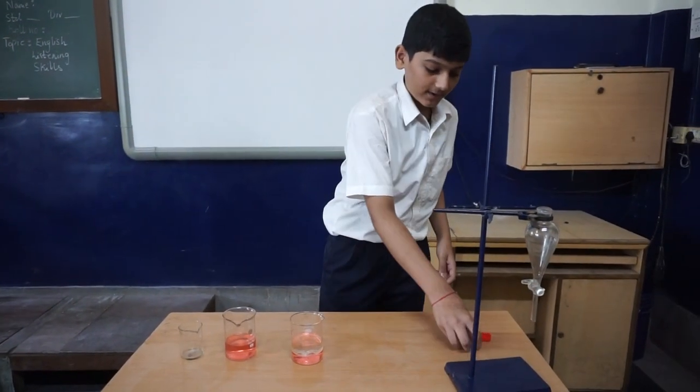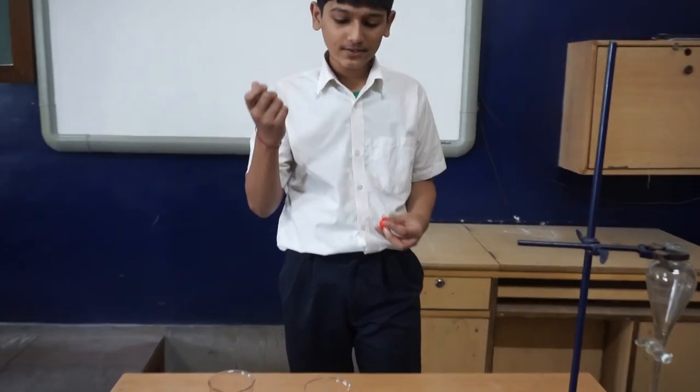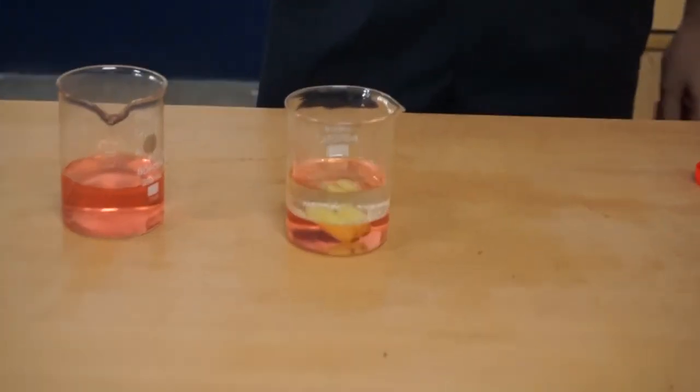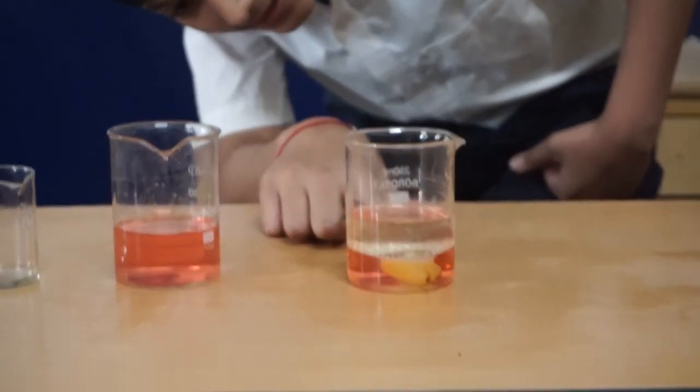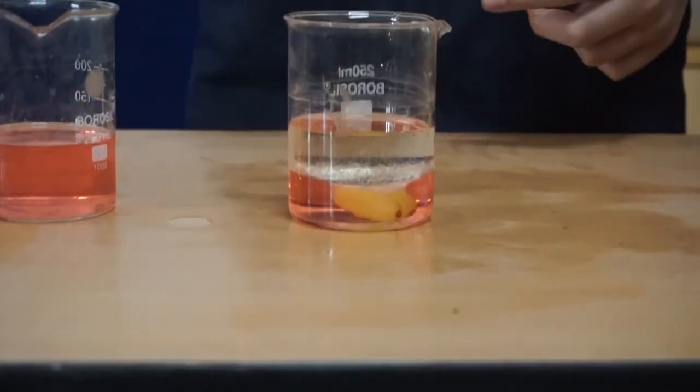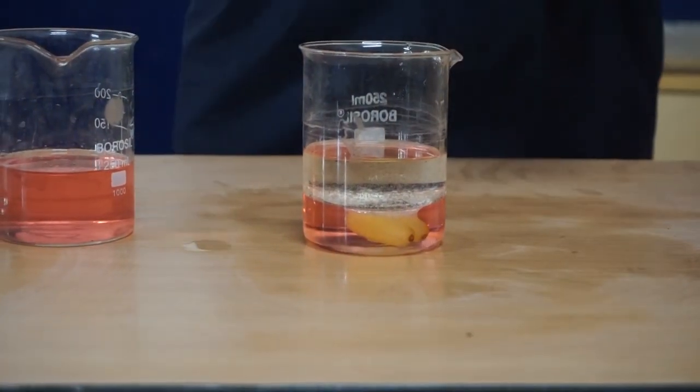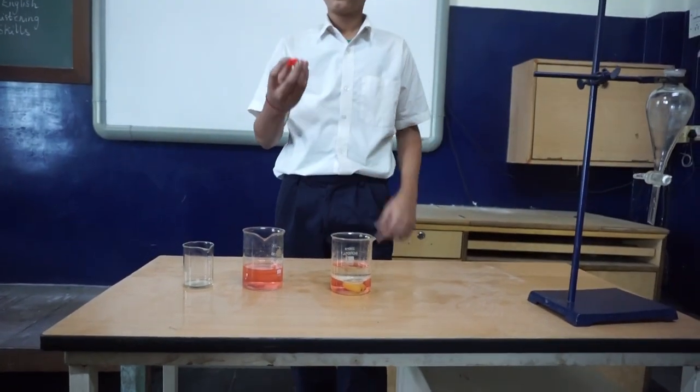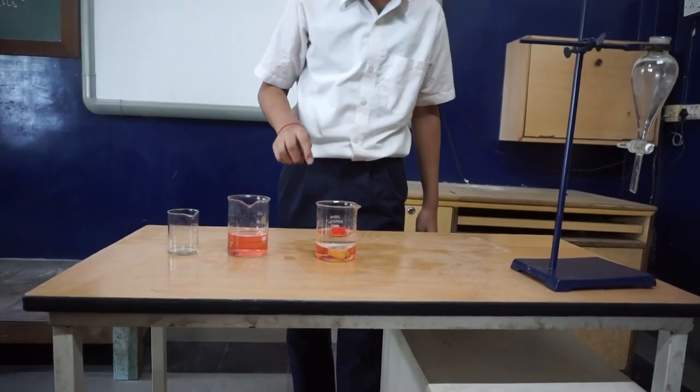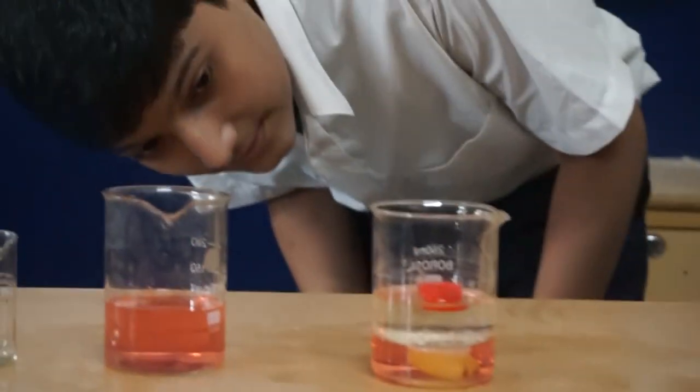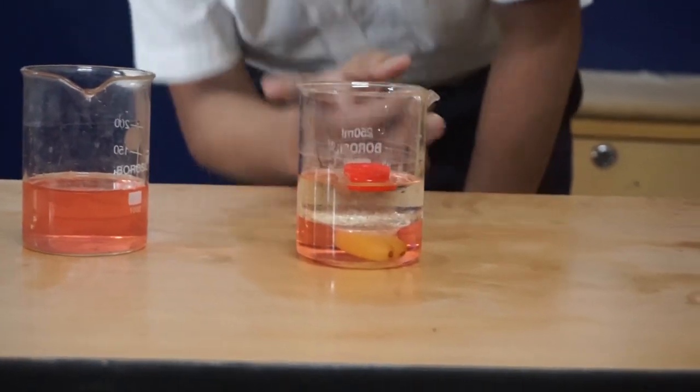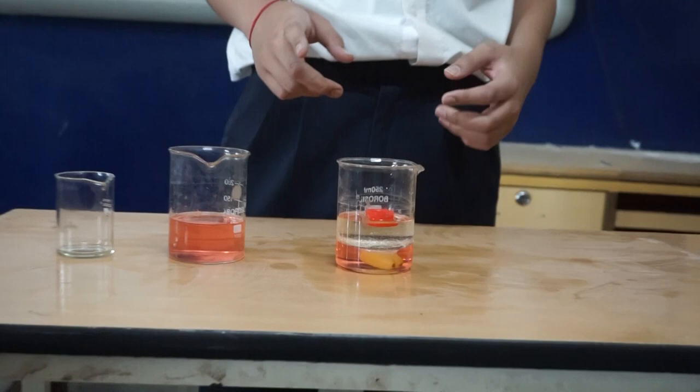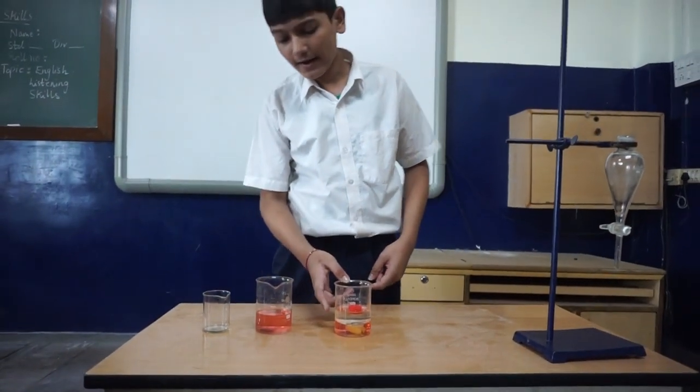Now, we will take these two objects. The bottle cap and these grapes. First, we will pour these two grapes inside it. As you can see, that the grapes sink inside water as well as oil. This means grapes has higher density than water and oil. Now, we will pour this bottle cap inside this. As you can see, that it floats on oil as well as water. Therefore, we can conclude that this bottle cap has lesser density than this water and oil.